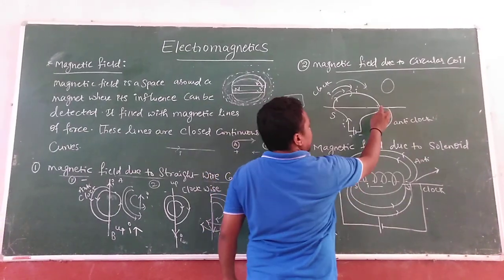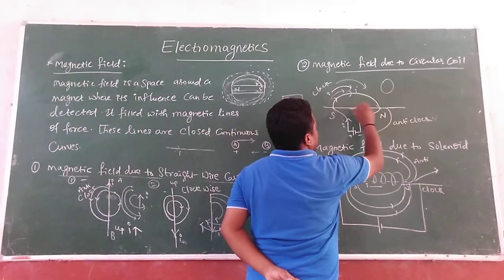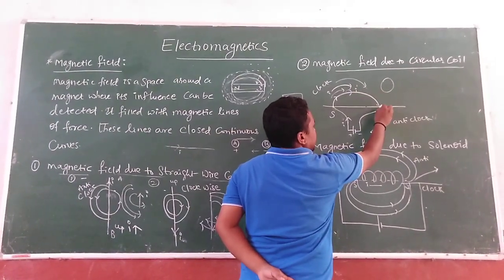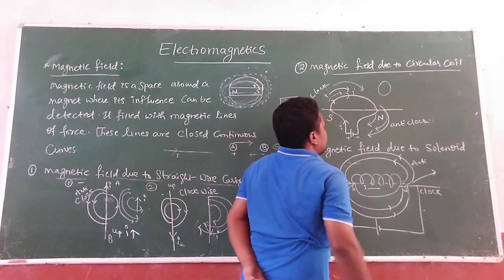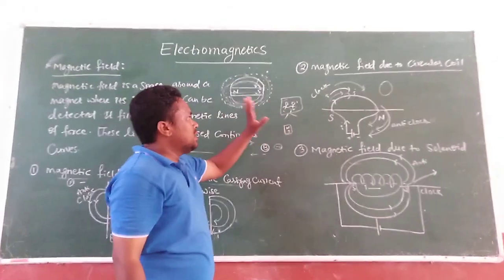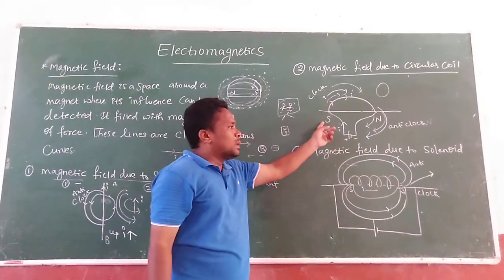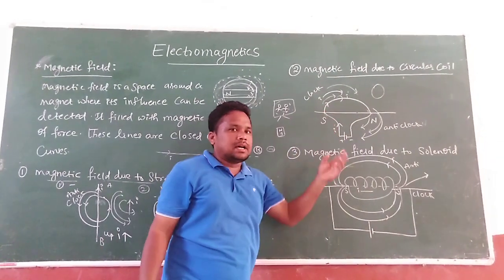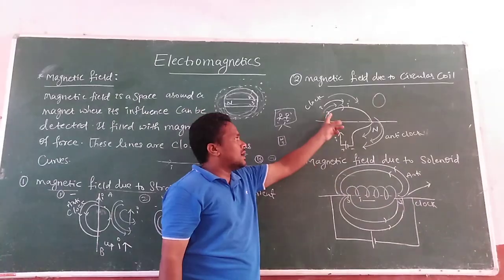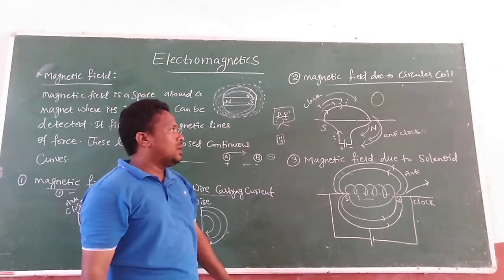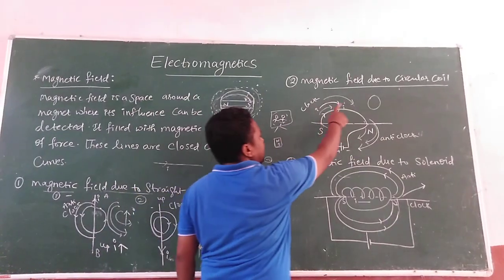At the other end — the North Pole — the current flows to reach the North Pole. In this situation, the magnetic field lines are in an anticlockwise direction. So remember two things about magnetic field due to a circular coil: at the South Pole, the magnetic field lines are in a clockwise direction; at the North Pole, the magnetic field lines are in an anticlockwise direction.